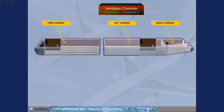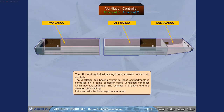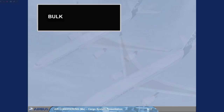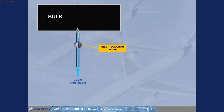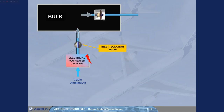Let's start with the bulk cargo compartment. On the long range, cabin ambient air enters the bulk cargo compartment via an inlet isolation valve. This air, which can be optionally heated by an electrical fan heater, is then extracted by a fan and, via an outlet isolation valve, is sent overboard through the aft outflow valve.